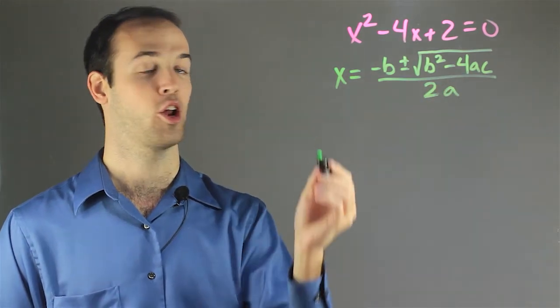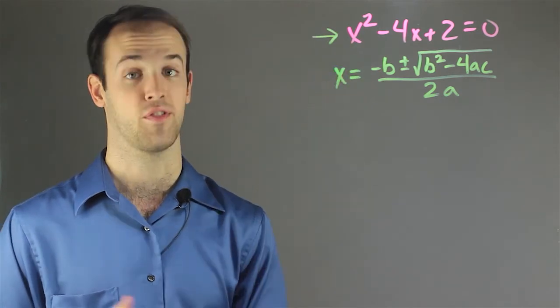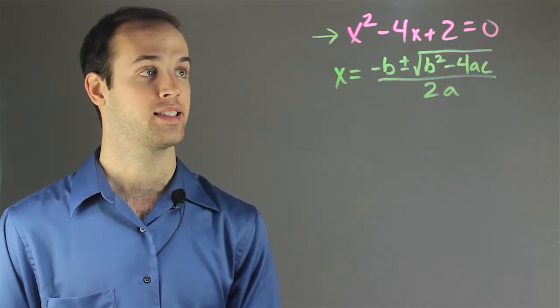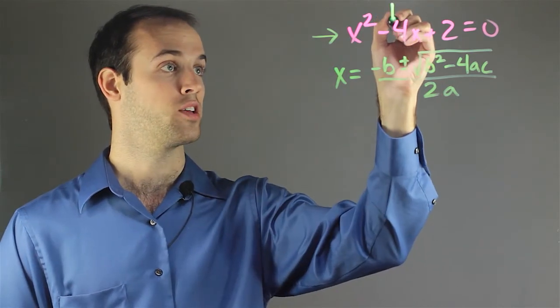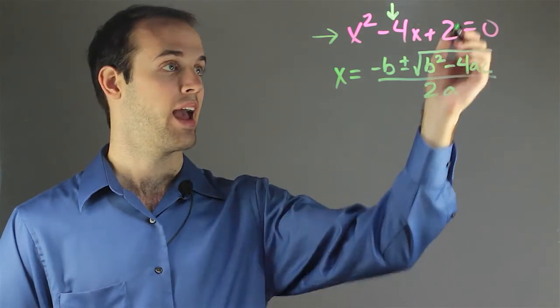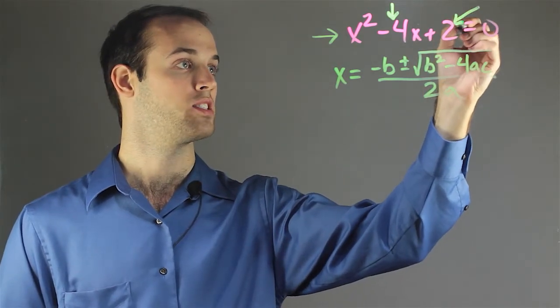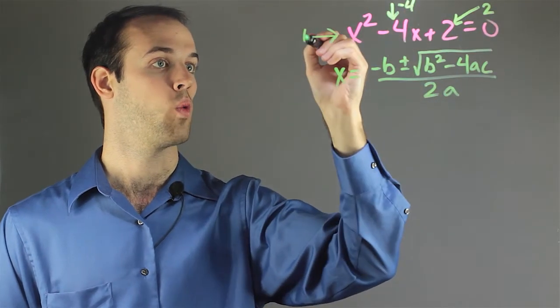Well, in a quadratic, I know that my a term is what's right in front of x squared, the coefficient. And I can see in this case, it's 1. So a value is going to be 1, b value is going to be right here, and I can see that that's going to be negative 4. And my c value is my constant term, which is 2. So I have 2, negative 4, and 1 to work with.